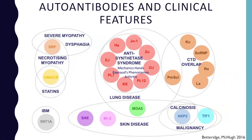We can also break down these autoantibodies into groups based on disease features — what patients actually have. This chart describes autoantibody groups based on adult data. Adults with myositis have the same autoantibodies as children, but they occur in different frequencies — some are more common in adults and some are less common. They also have some semi-different features, though there is a lot of overlap.